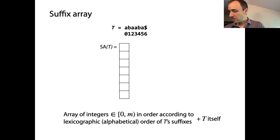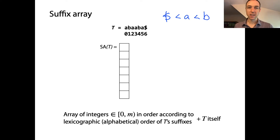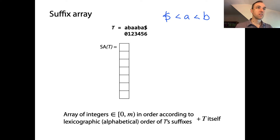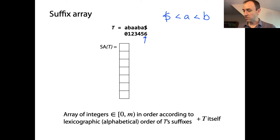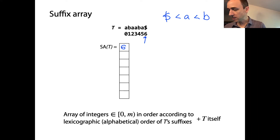Recall the rule that when we add a dollar sign onto the end, dollar sign is less than all the other characters in the alphabet. So if we use the ordering where dollar sign comes first, then a, then b — the first suffix alphabetically among all suffixes is the one that starts at offset six, because that one starts with dollar sign, and dollar sign is the smallest of all the characters. So we put a six in the very first element of the suffix array.